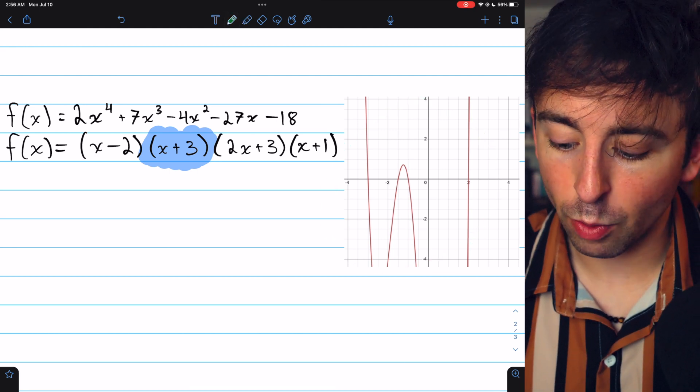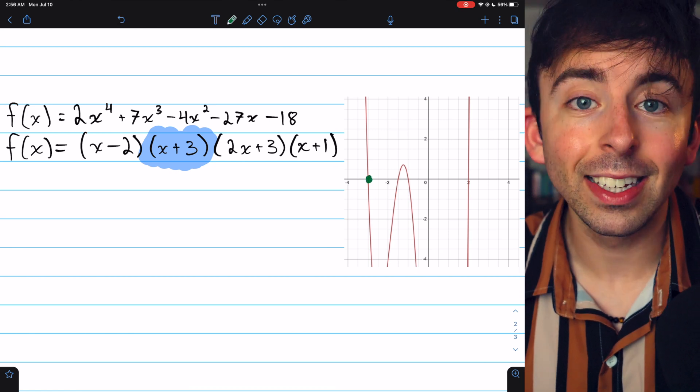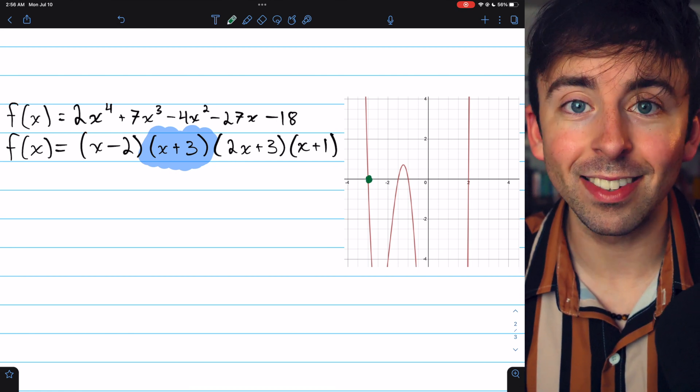And looking at the graph, we can see that the function hits 0 at x equals negative 3. It's an x-intercept.